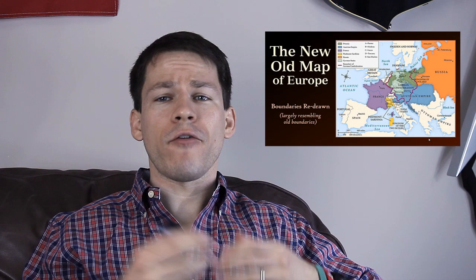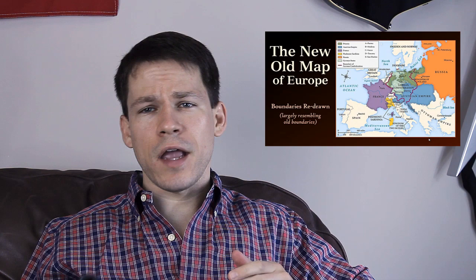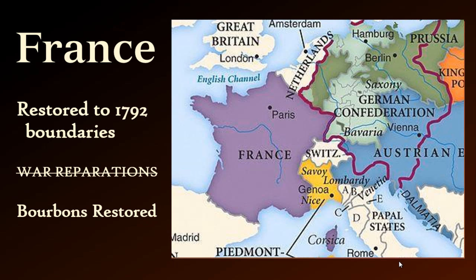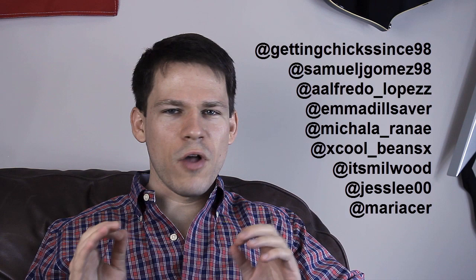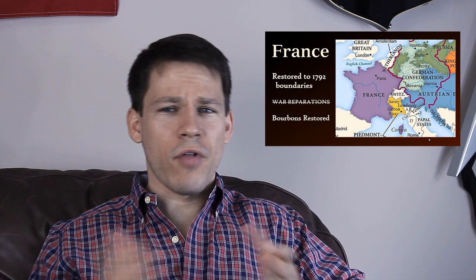Now let's take a look at what I'm going to call the New Old Map of Europe. Keep in mind this map is being drawn according to conservative principles — trying to remake the boundaries of pre-Napoleonic Europe, while taking into account new realities. For France, it's basically a throwback to 1792, not too far back. There are no war reparations, and the Bourbons are going to be restored — Louis XVIII — so France is going to be recreated in its old image.